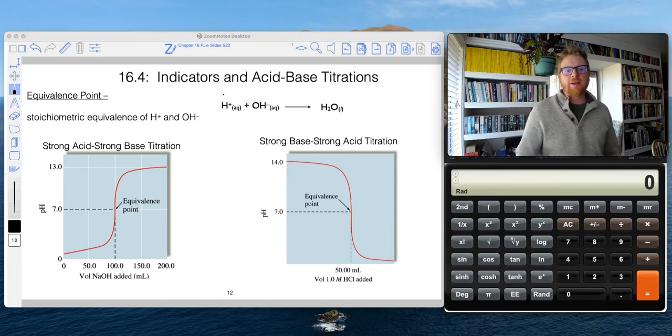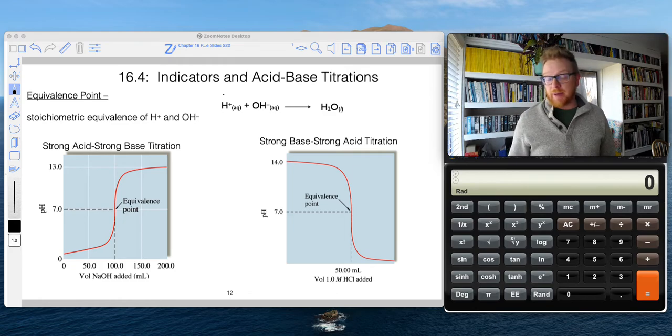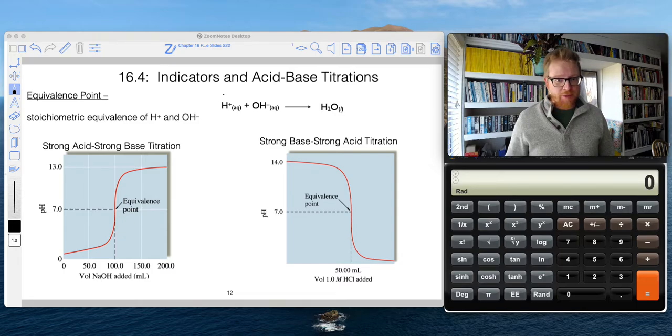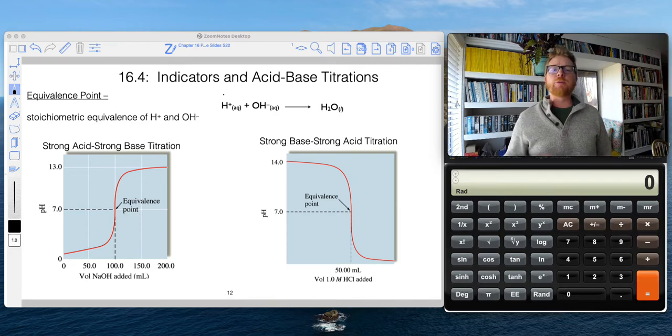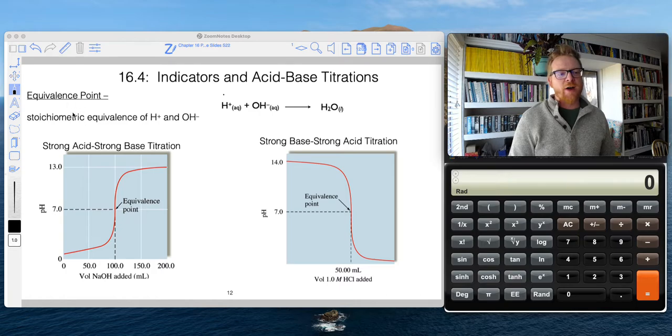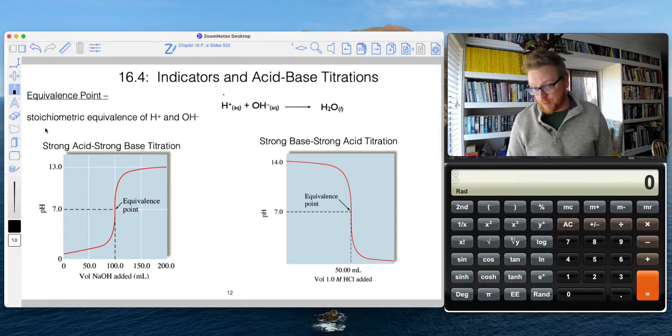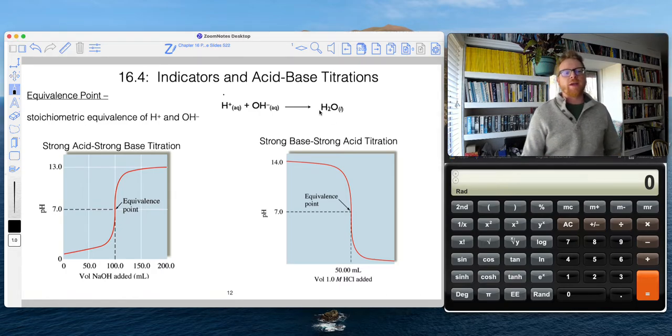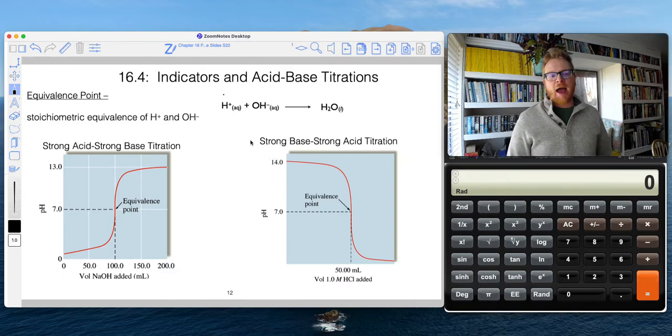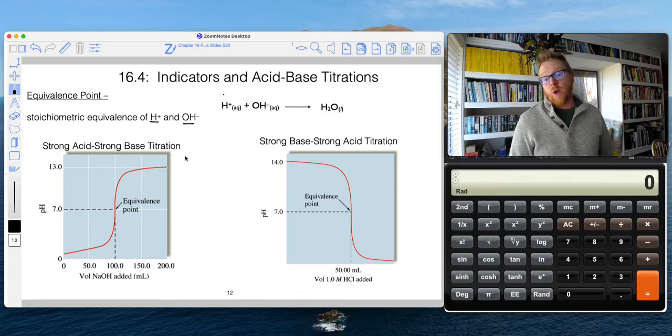Picking up right where we left off, we're going to discuss titrations, acid-base titrations and indicators. You've already done this in Chem 109, if you recall. I know some of you maybe did this virtually, some of you actually did it in person. But if you recall, in a titration we are trying to find the equivalence point. And that equivalence point is when we have the same amounts or the stoichiometric equivalent of H plus and OH minus.